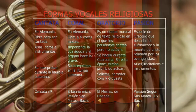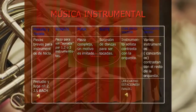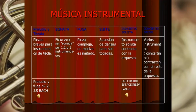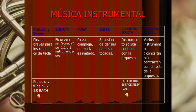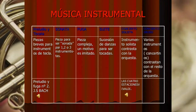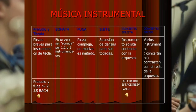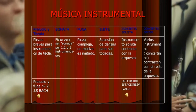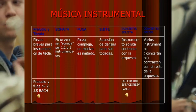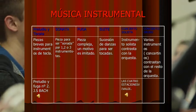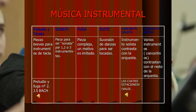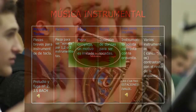En este período se desarrollaron nuevas formas y se operaron grandes avances técnicos tanto en la composición como en el virtuosismo. Así tenemos: cromatismo, expresividad, bajo cifrado y bajo continuo, intensidad, ópera, oratorio, cantata, sonata, tocata, suite, fuga y la sinfonía.